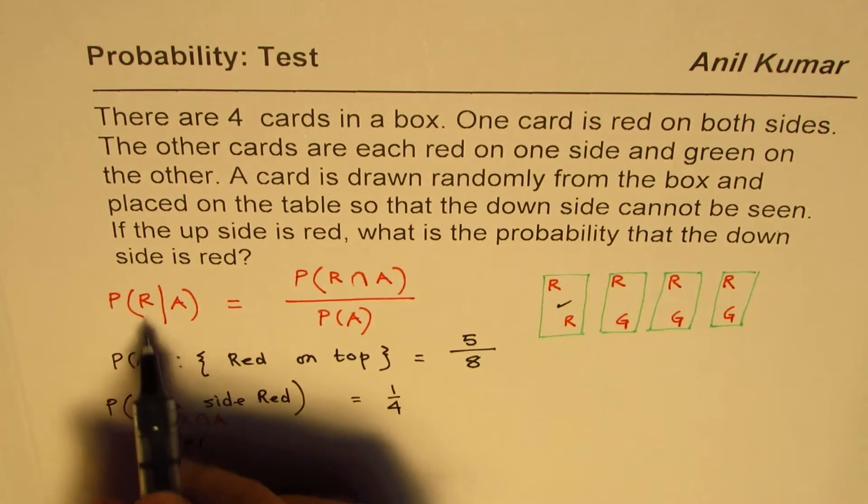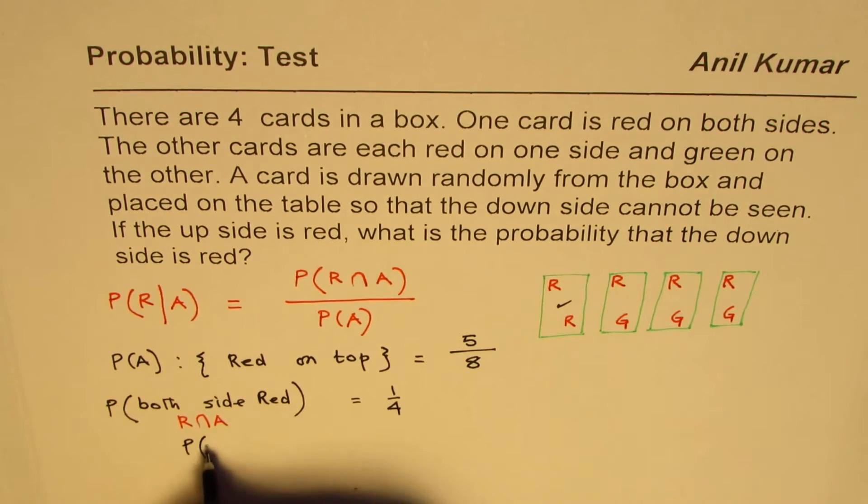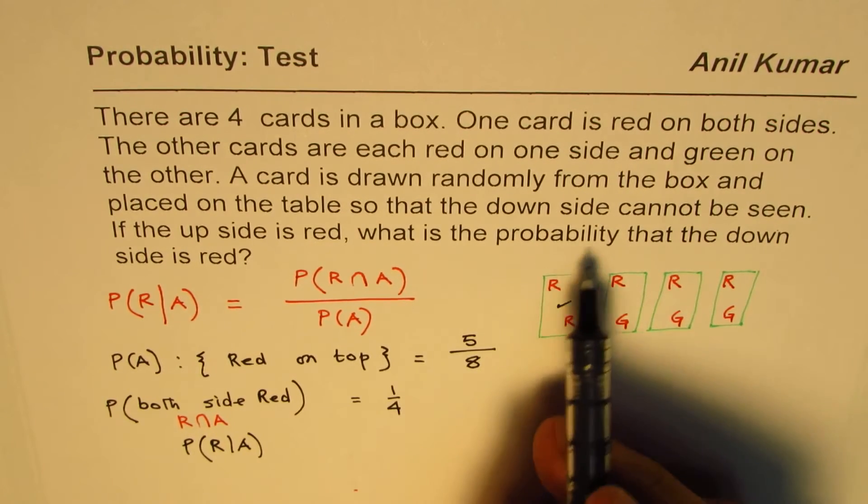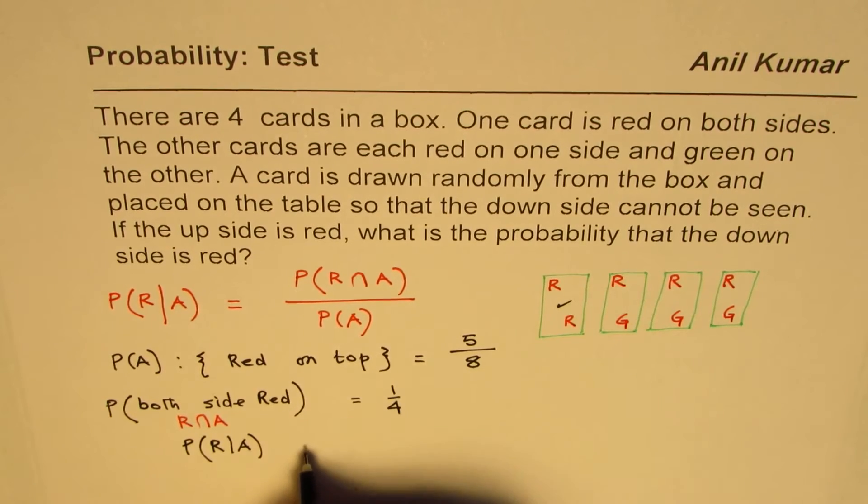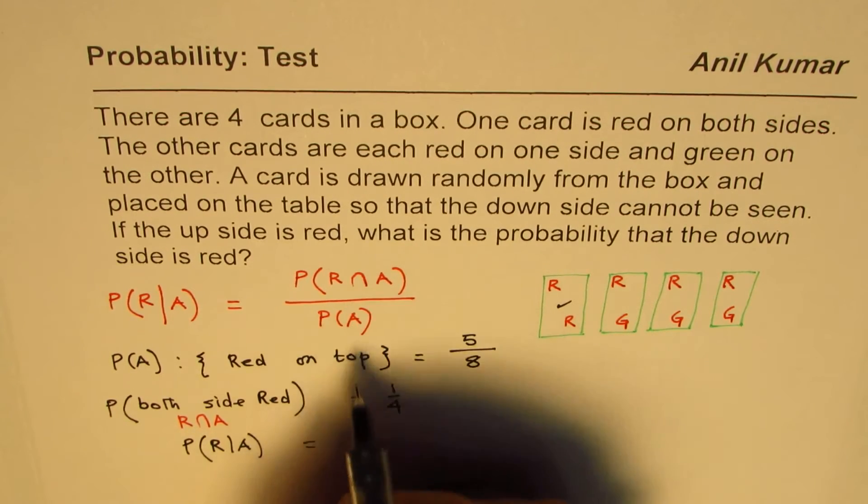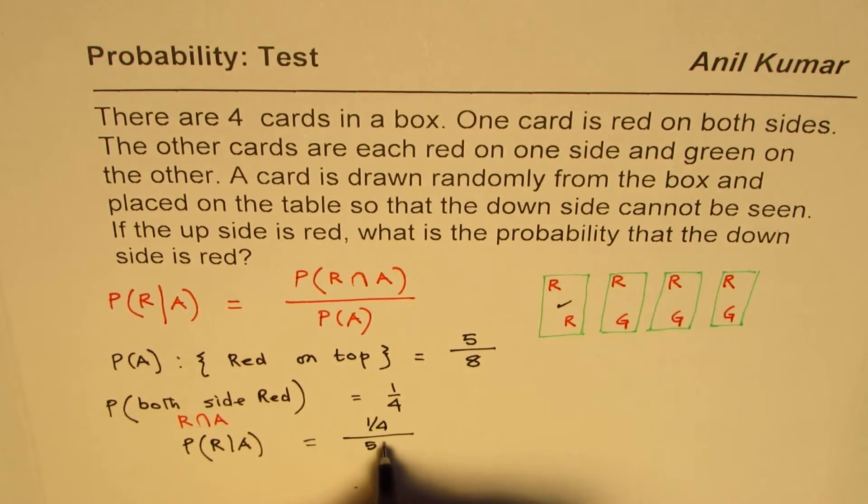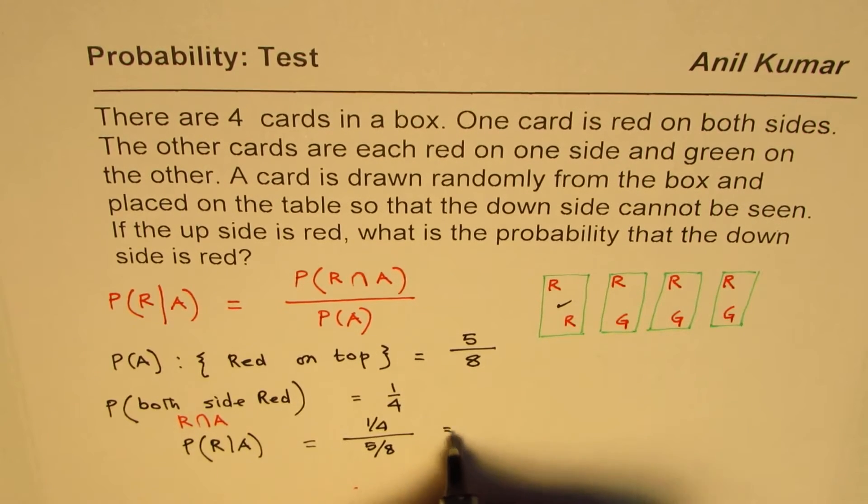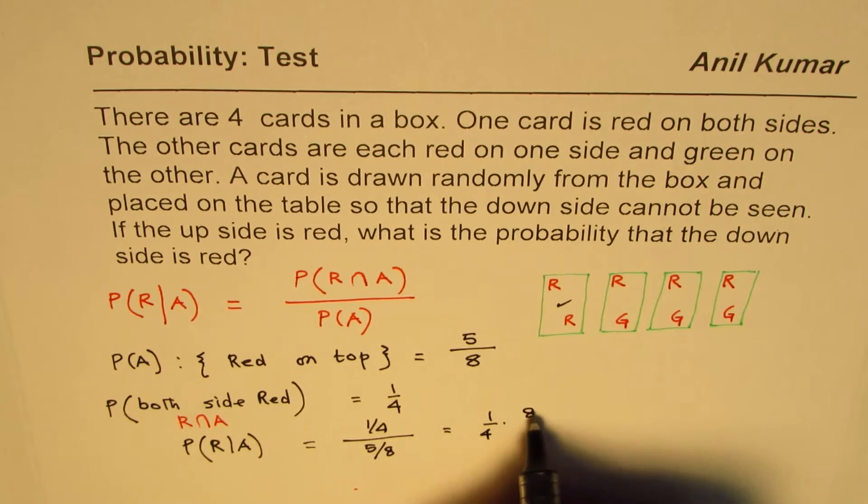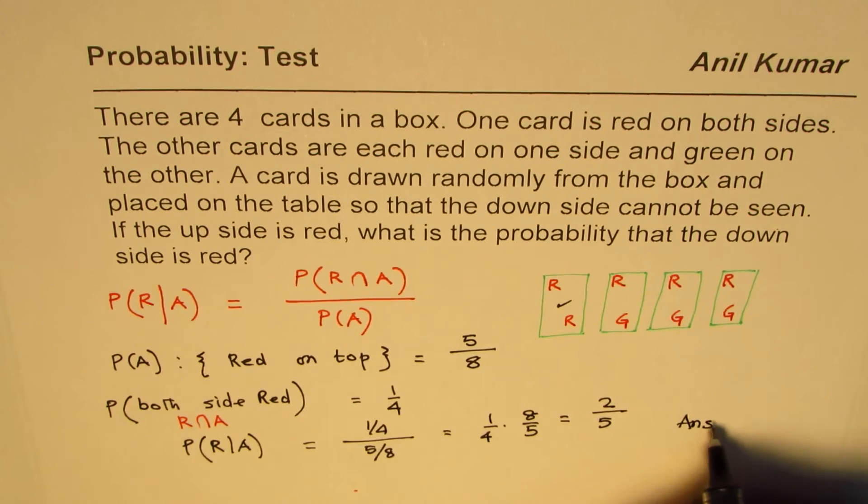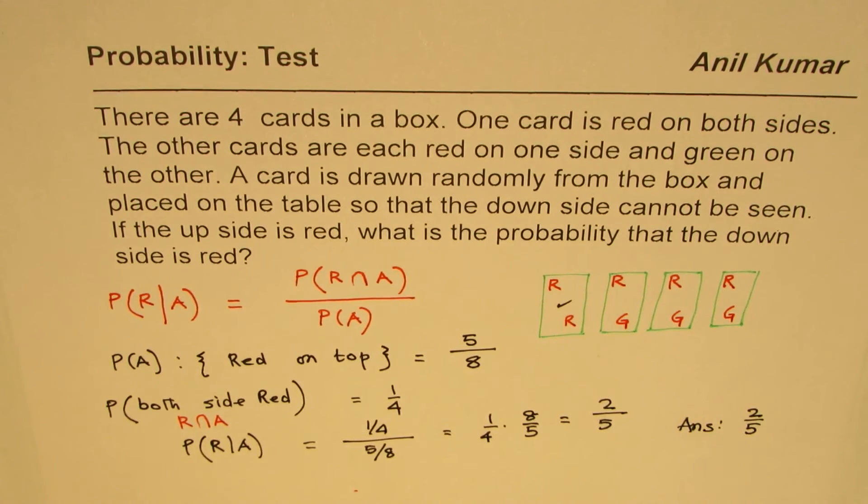And therefore, probability to get the other side also red when we are given that the card drawn is red on top is that ratio. So that is one over four divided by five over eight. And that could be written as one over four times eight over five or two over five. So that becomes our answer, two over five.